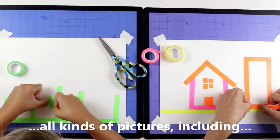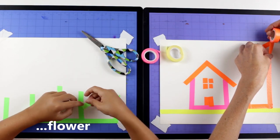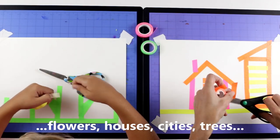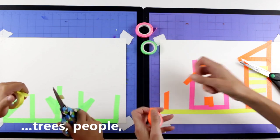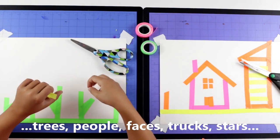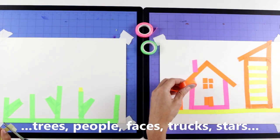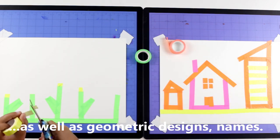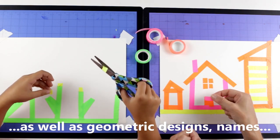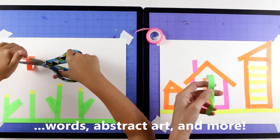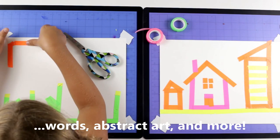You can use tape to draw all kinds of pictures including flowers and gardens, houses, cities, trees, people, faces, trucks, stars. As well as geometric designs, names, words, abstract art and more.